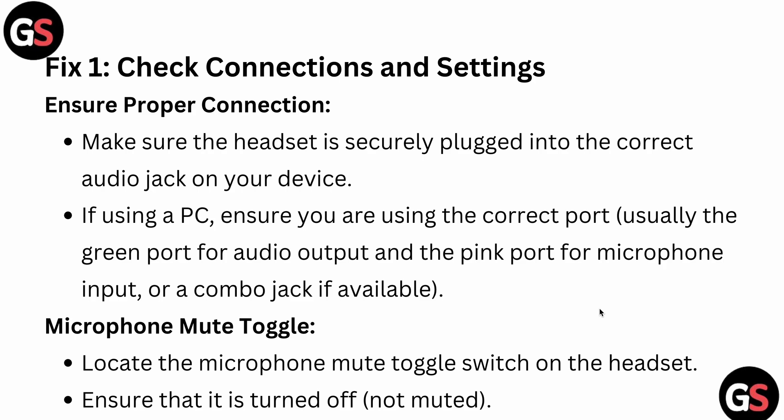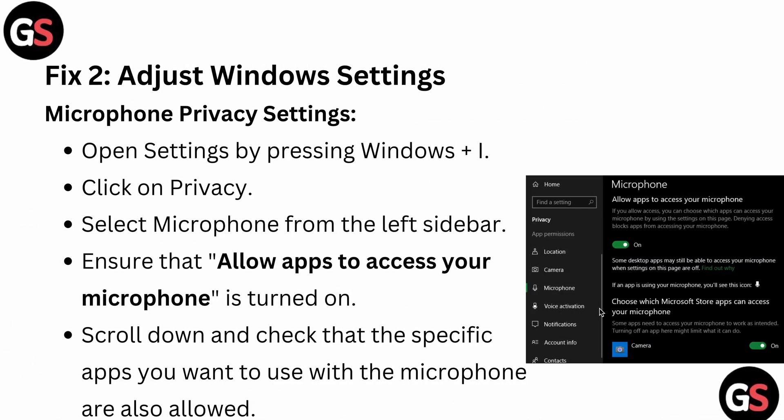First of all, check your connections and settings. Ensure the headset is securely plugged into the correct audio jack on your device. If you are using a PC, make sure you are using the correct port — usually the green port for audio output and the pink port for microphone input — or a combo jack if available. Also locate the microphone mute toggle switch on the headset and ensure it is turned off.